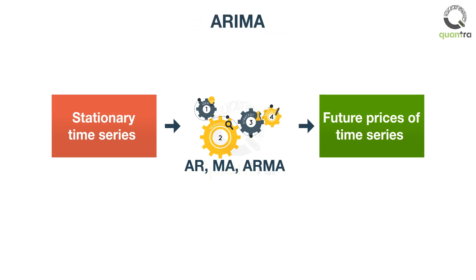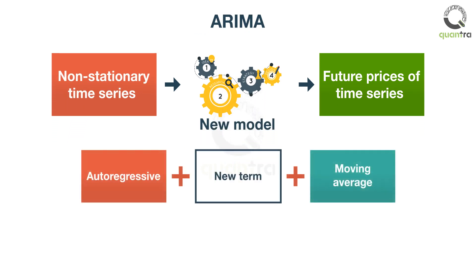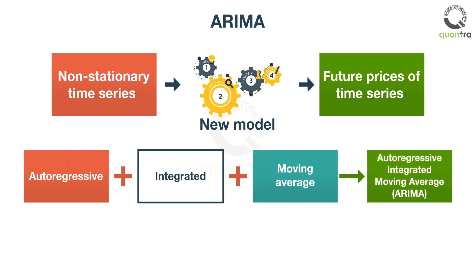However, if the time series is not stationary, then you need another model that can work with a non-stationary time series. This new model is an extension of the ARMA model. It adds I, or integration, to ARMA to make the time series stationary first and then apply ARMA. The new model is called the autoregressive integrated moving average, or ARIMA model.